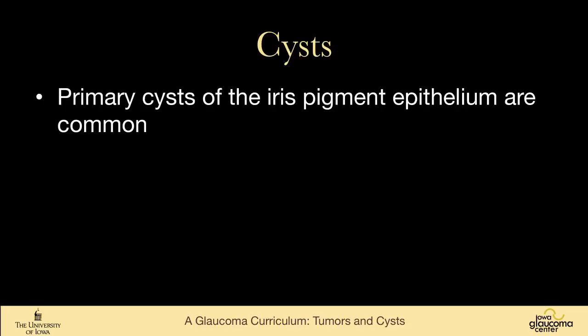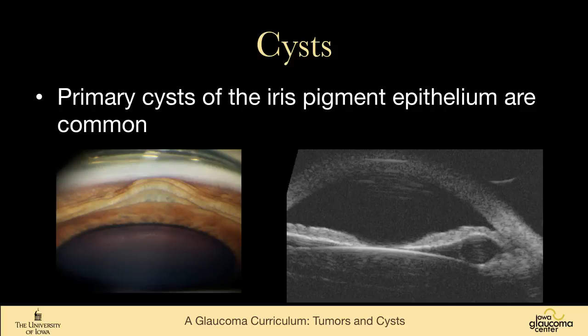Cysts can rarely cause elevated intraocular pressure. Cysts of the pigment epithelium are very, very common — they just cause a fullness in the iris. On ultrasound, one can see that these are fluid-filled cysts. On gonioscopy, there's a fullness but the iris structure is completely normal — it just looks like there's something underneath it. On anterior segment ultrasound, you can clearly see the cyst of the pigment epithelium.